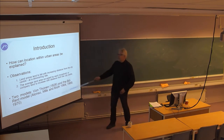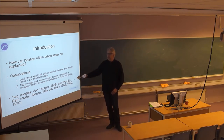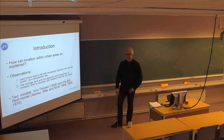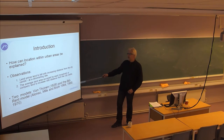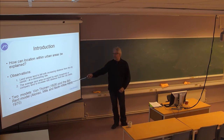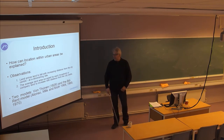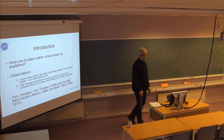This theory from Von Thünen is quite ancient — it's from 1826. He was the first to elaborate on the distribution of land use, and it was followed by Alonso, Mills, and Muth — the so-called AMM model — developed during the 1960s.